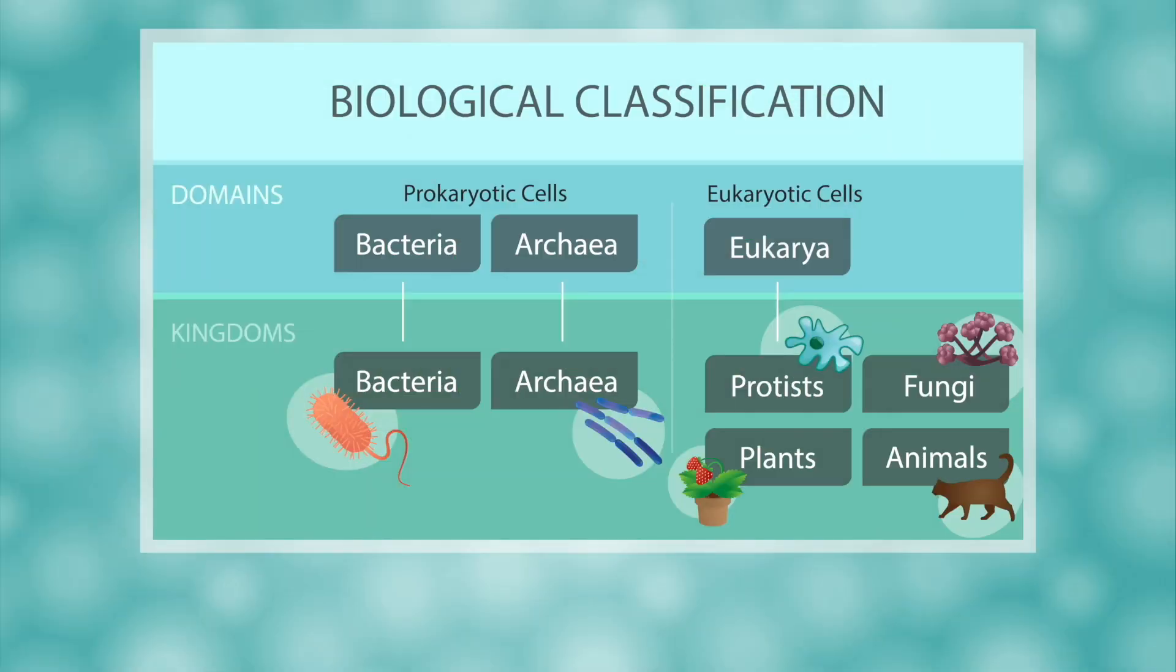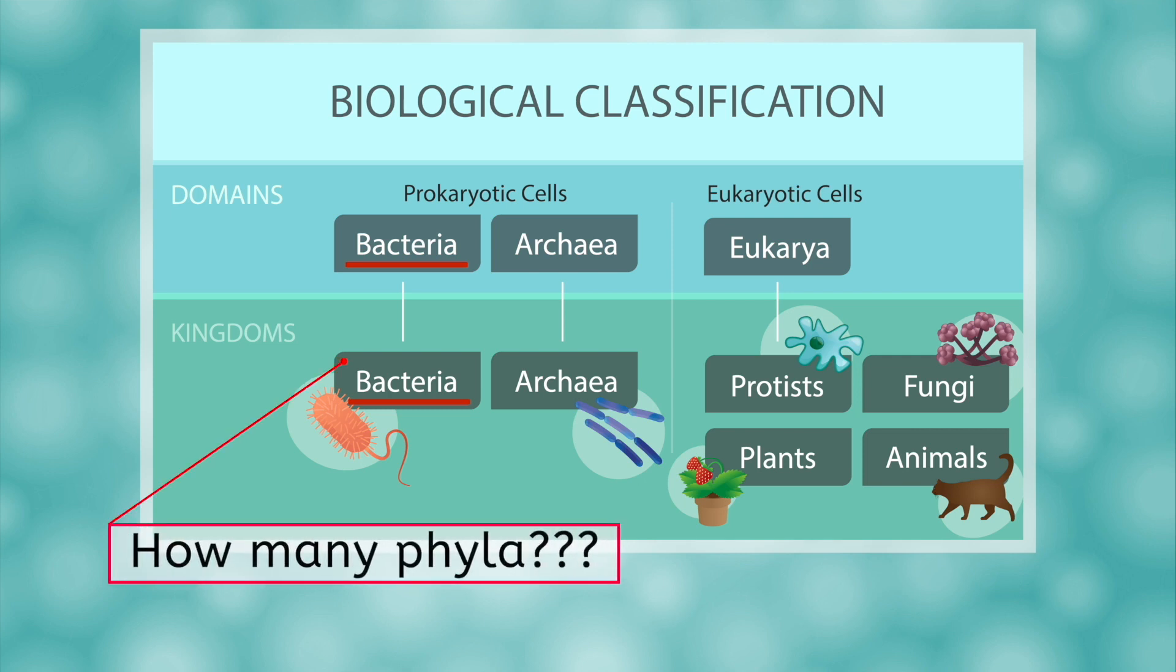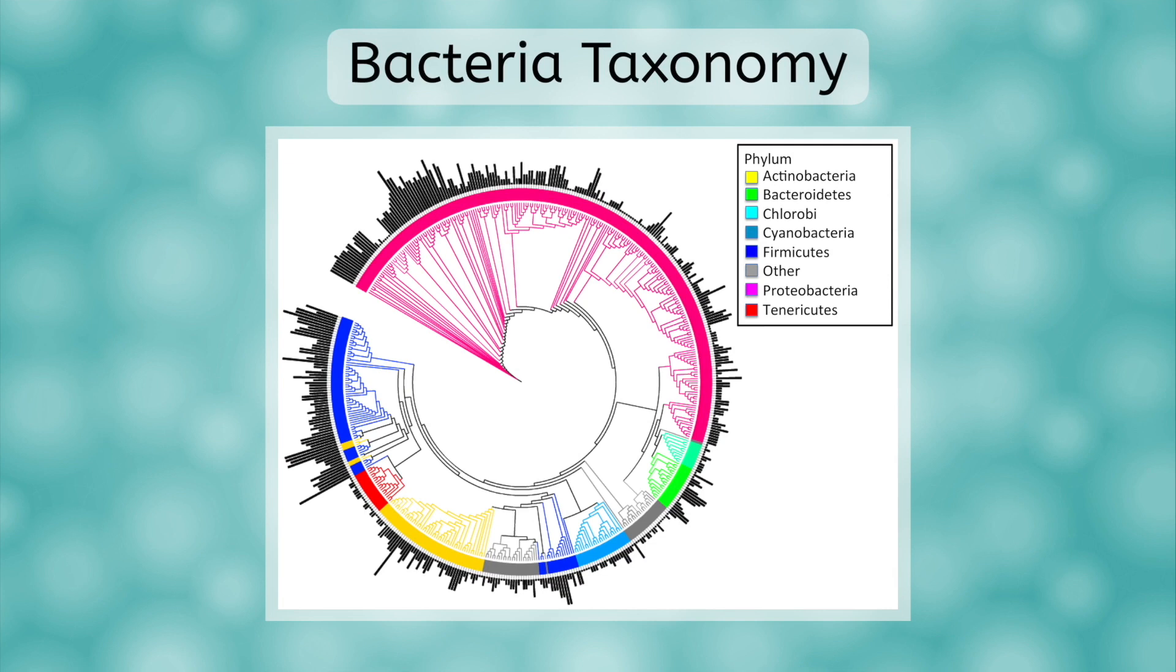Remember that life is grouped into three domains. Today, we are focusing on the bacteria domain, which has one kingdom, also called bacteria. Within the bacteria kingdom, there is debate among scientists about how many phyla they should be divided into. Some feel that they can be accurately divided into nine phyla. Others would rather see as many as 50 or more phyla of bacteria added.